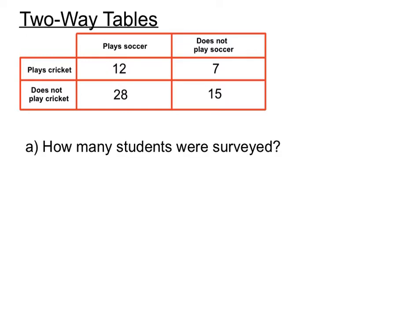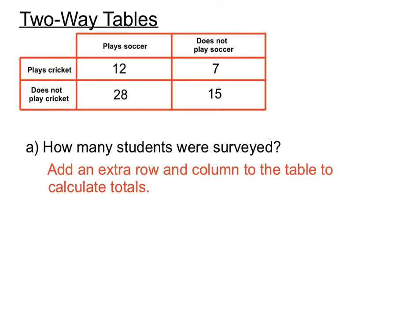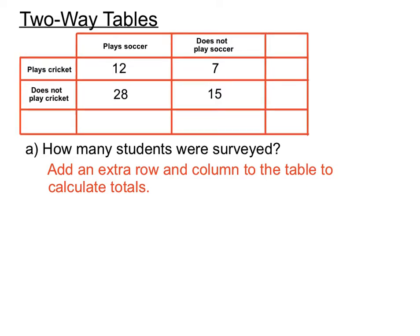We might be asked how many students altogether were surveyed. There are four different categories and numbers in each of them, so we could add those up. But it's handy to have extra totals, because some questions might ask us to focus on all the people who play soccer or don't play cricket. So it's wise to add an extra row and column to the table and calculate some totals.